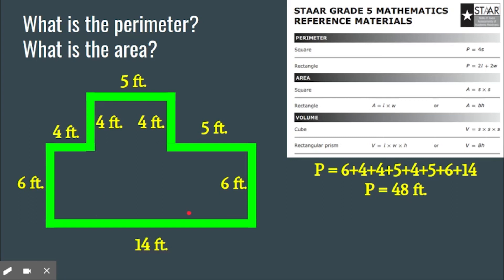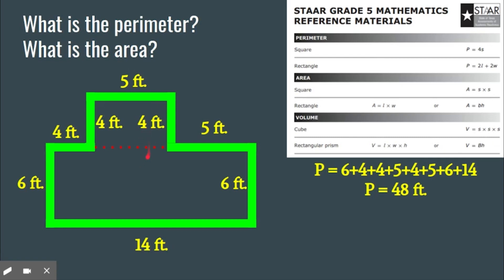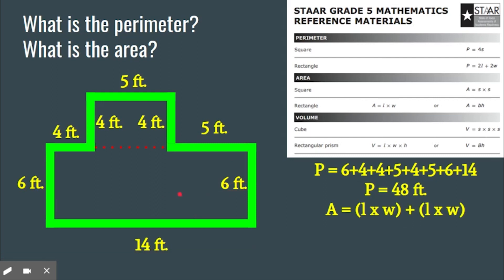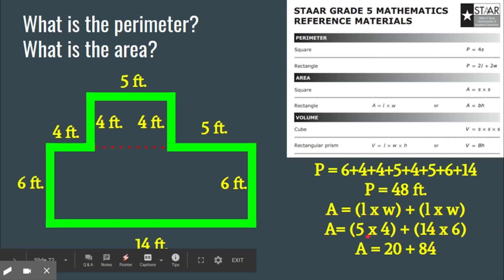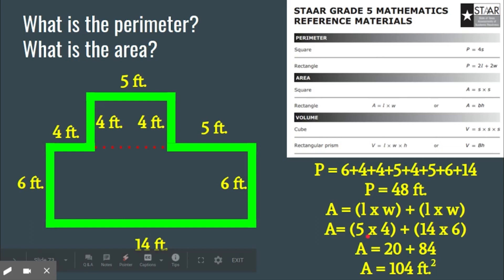The area can be a little trickier, but just think about these as two rectangles together. You can think about a small rectangle and a large rectangle. This one we'll make two rectangles: a 5-foot by 4-foot rectangle and a 14-foot by 6-foot rectangle. The formula combines both areas. Five times 4 is 20, and 14 times 6 is 84. Add those together, which gives us an area of 104 square feet. It is a lot of steps, but it's like a puzzle — you can do it!